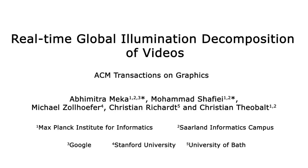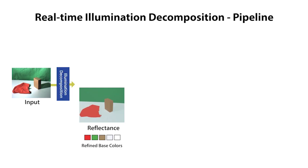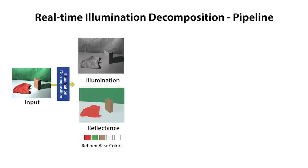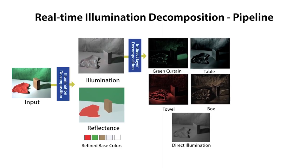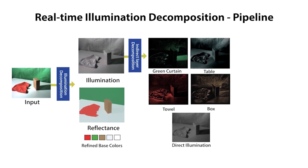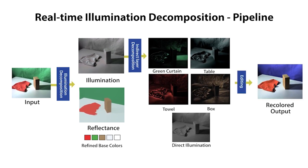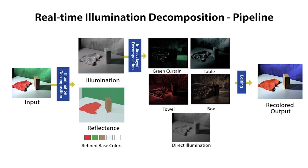We present the first method to decompose a video in real time into multiple components of light transport to enable photorealistic video editing. We decompose an input video in real time into a reflectance layer and an illumination layer, which is further decomposed into light transport components reflected from various objects in the scene. This enables for the first time global lighting-aware editing of videos in real time.